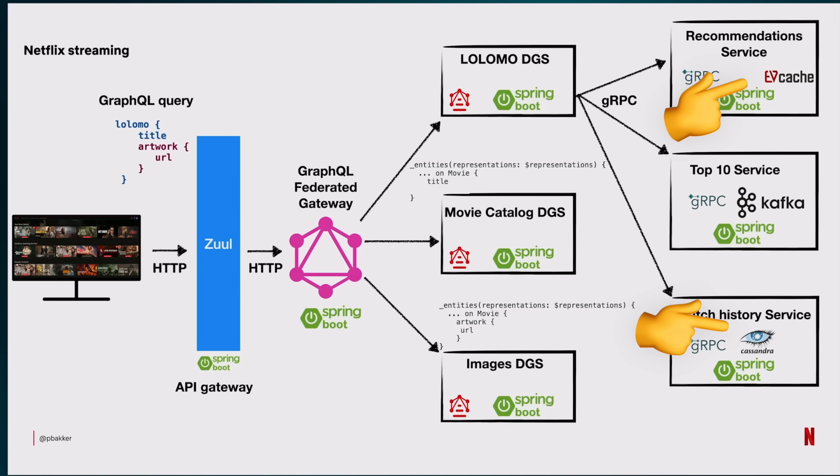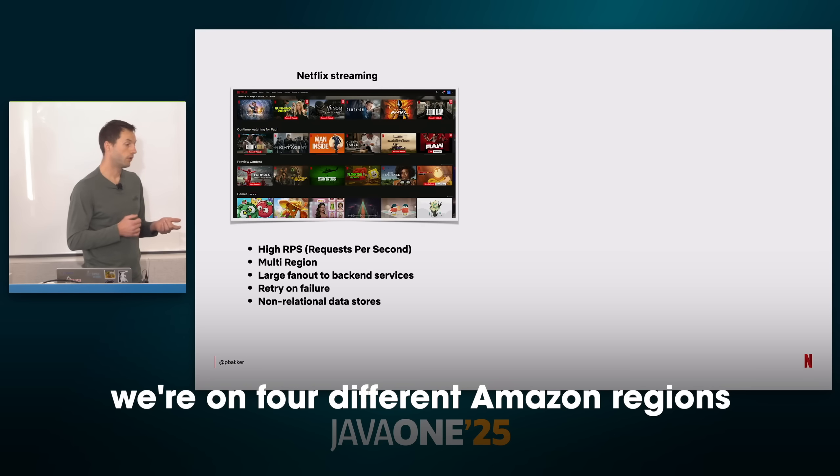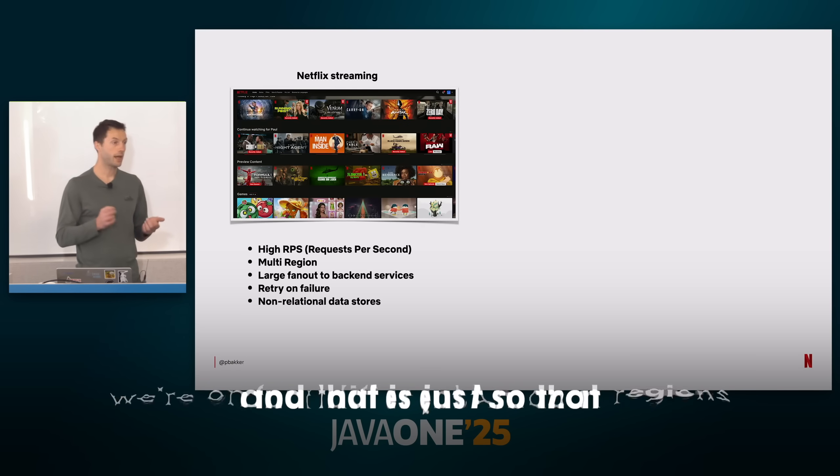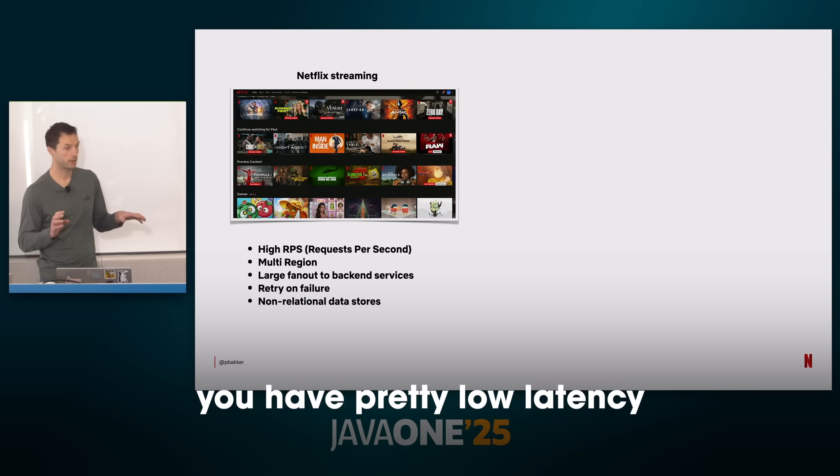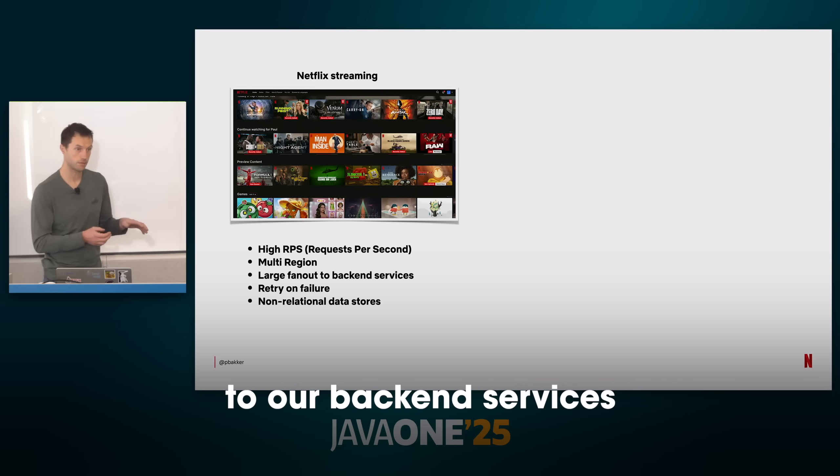The way Netflix uses data is mostly distributed data stores — things like EVCache, Cassandra, and Kafka. Why? Because relational databases don't scale well across multiple AWS regions, and their streaming apps are multi-region — you're on four different Amazon regions — so that wherever you are in the world, you have very low latency to their backend services.